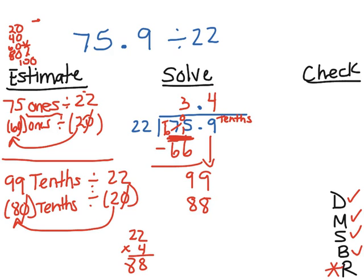22 times 4 gives me 88. So I, oh, this R, I forgot the R down here. The R stands for repeat. We need to do it again. So we did repeat. I divided. I multiplied. Now I need to subtract. 9 minus 8 is 1. 9 minus 8 is 1.